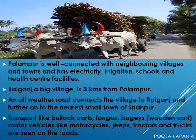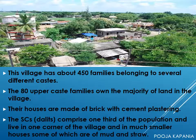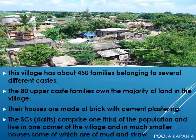Transport like Tongas, Bogies, motor vehicles like motorcycles, jeeps, trucks and tractors are seen on the roads. This village has about 450 families belonging to several different castes. In this village, there are 80 upper caste families and these families own the majority of the land in the village.